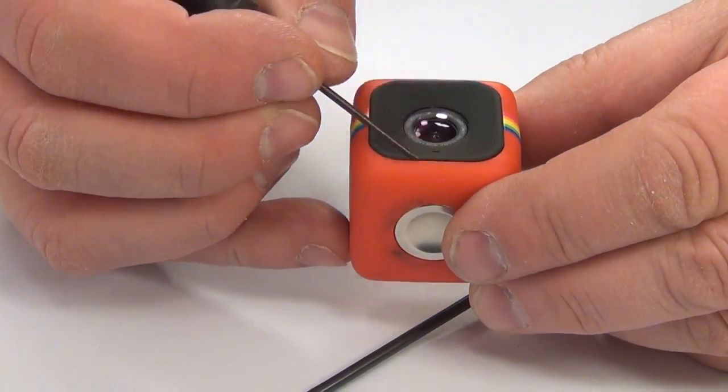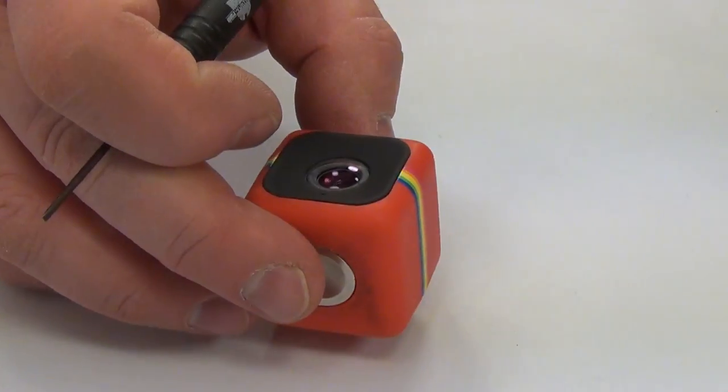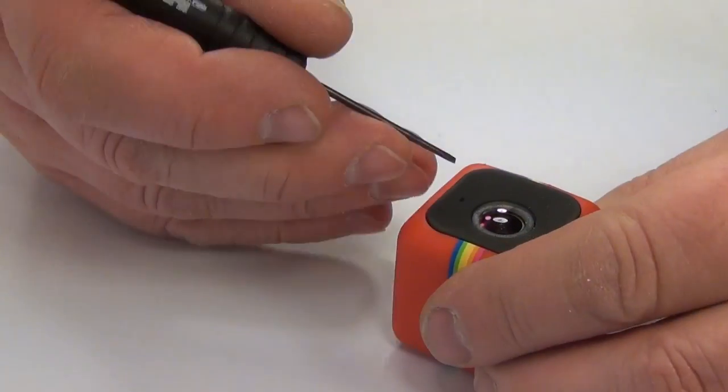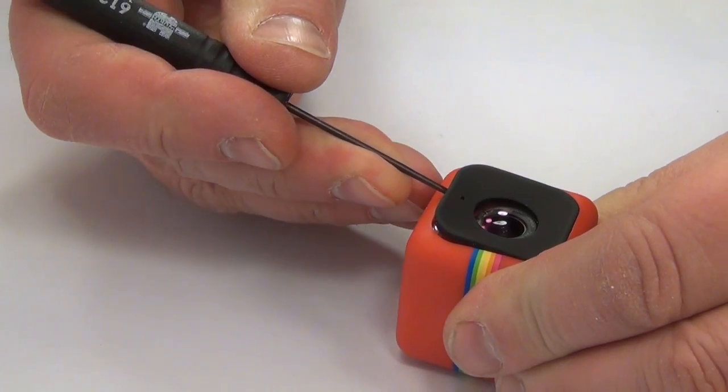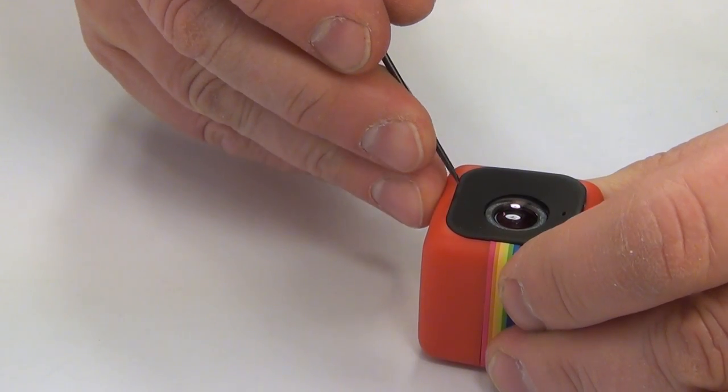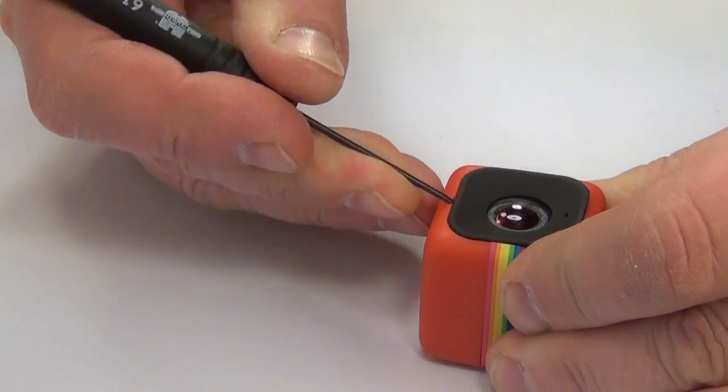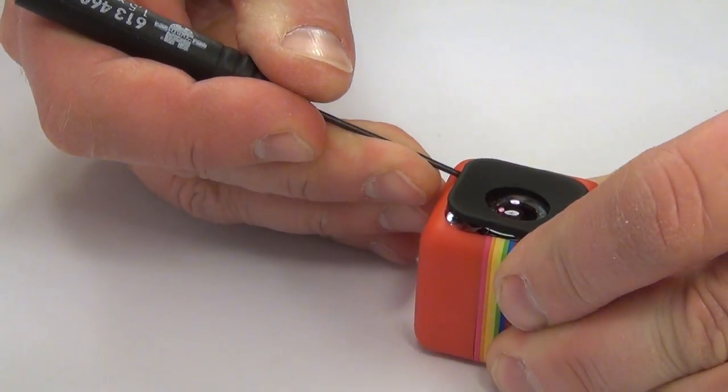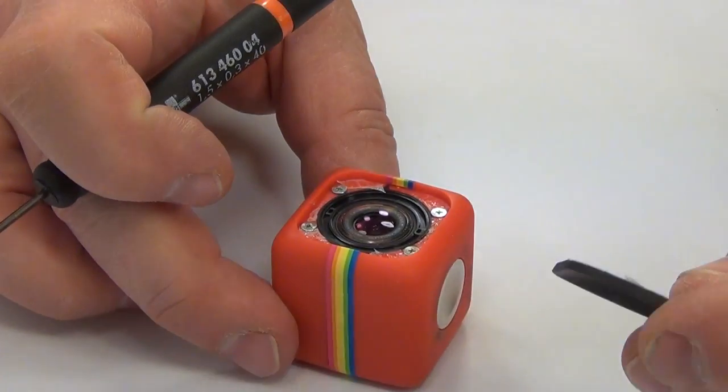So we go underneath there with a little screwdriver. We'll see how easy that is. Do you see how easy this was? Oh, look at that. We do the other side. That one is a little more reluctant. There we go. Very easy.